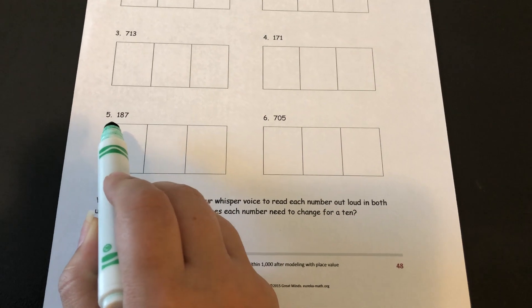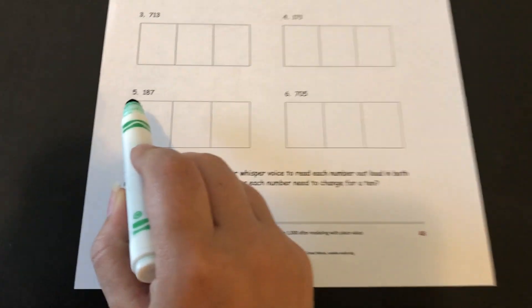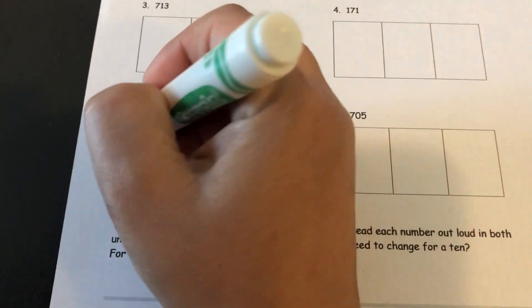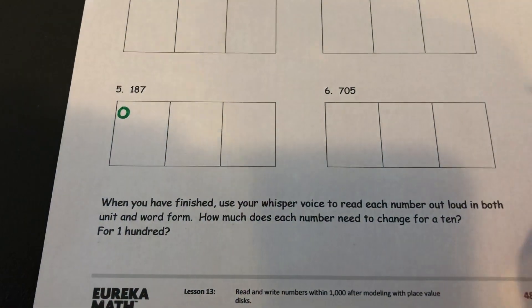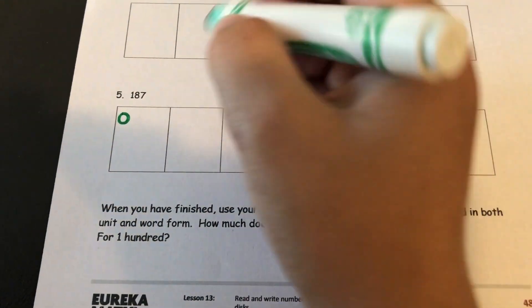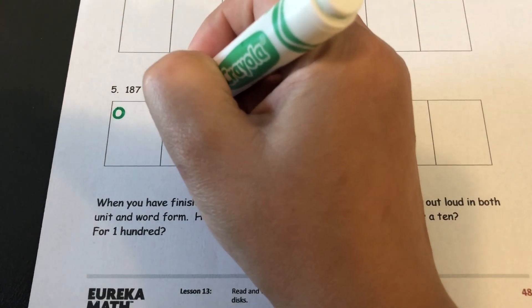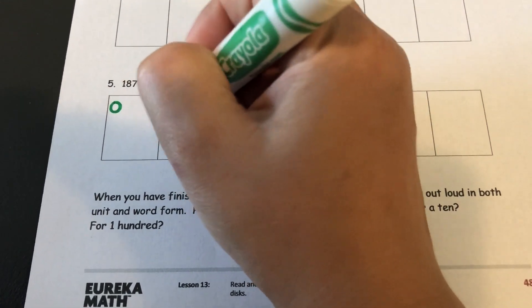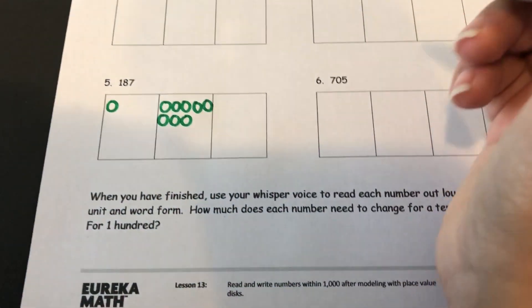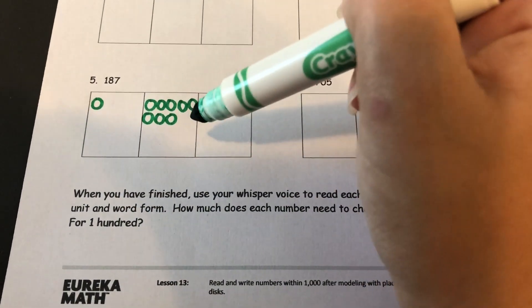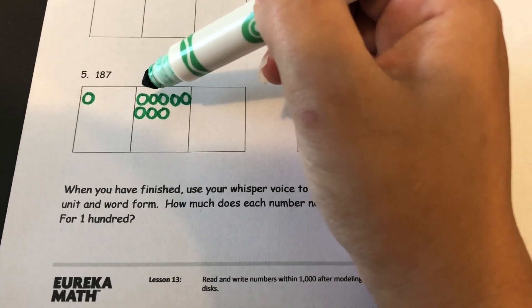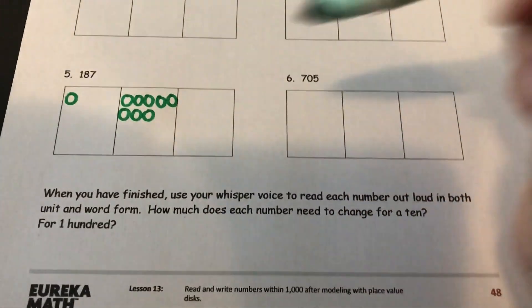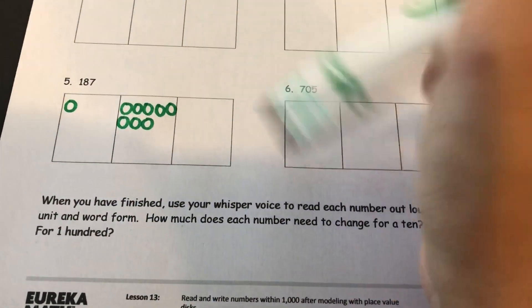So looking at number 5 it is 187 which means it has 1 in the hundreds place, 8 in our tens place, and when I drew my 8 tens I made sure to do a row of 5 and then 3 more, and 7 in the ones place.